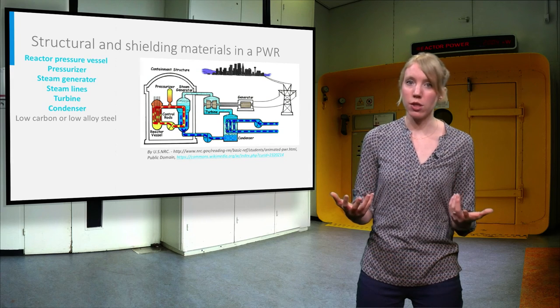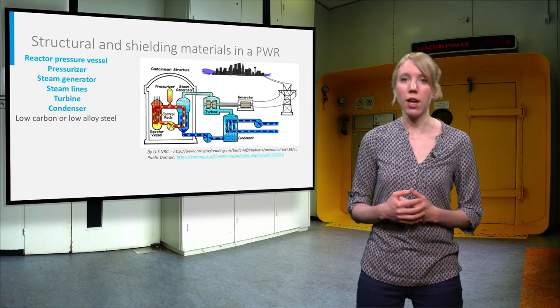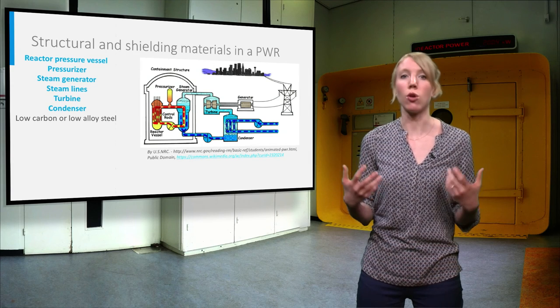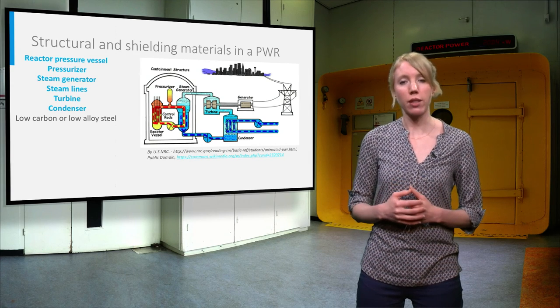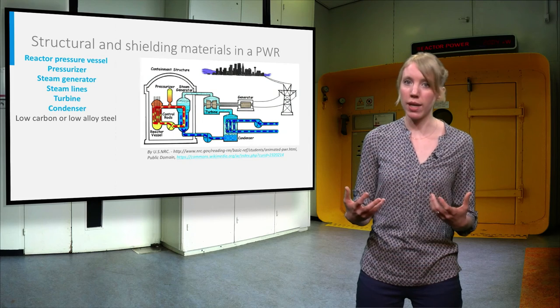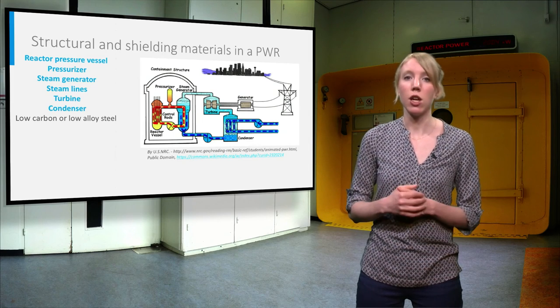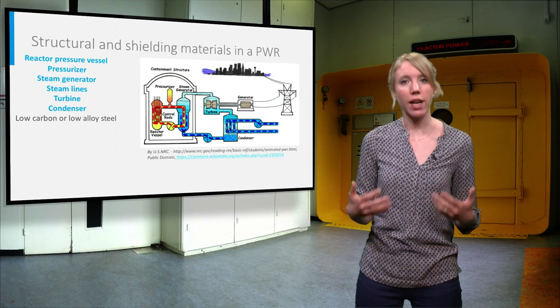The other components of the pressurized water reactor are made of low carbon or low alloy steel for the reactor pressure vessel, pressurizer, steam generator, the steam lines, the turbine, and the condenser.